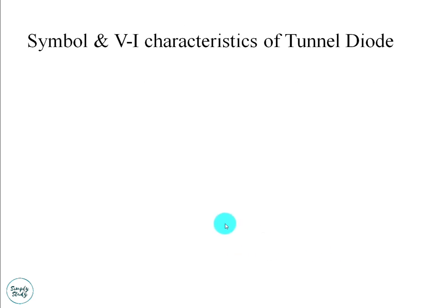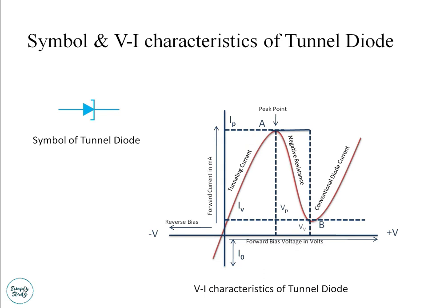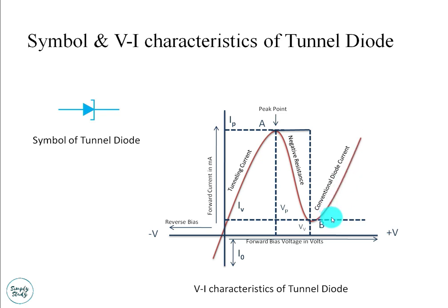This is the symbol of a tunnel diode. The VI characteristic of a tunnel diode looks like this. As the forward voltage increases, the forward current also increases until a peak point named A on the graph. After point A, from A to B, this is the area of negative resistance — as the forward voltage increases, the forward current decreases. After point B, the diode behaves as a normal diode and current increases with voltage. The value at point B is approximately 0.7 volts, after which the diode behaves as a conventional diode.